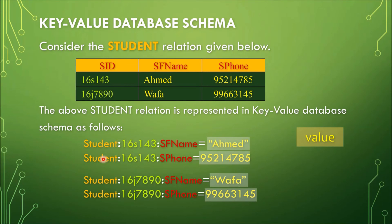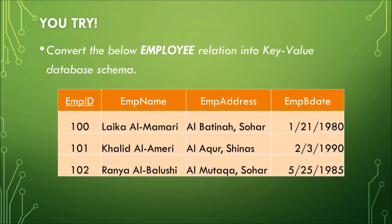Now I want you to try to convert the relation given here: convert the employee relation below into a key-value database schema. This table has four columns and three records. Pause this video and try it yourself. Are you done? Let's see the solution.